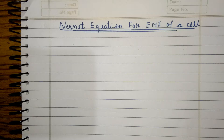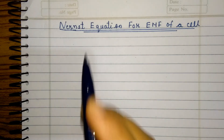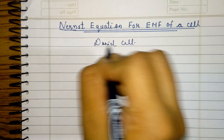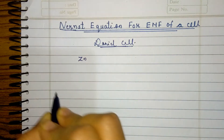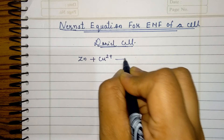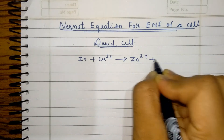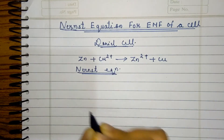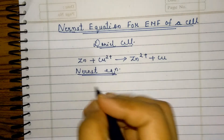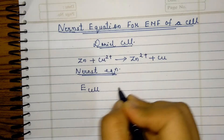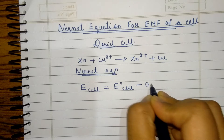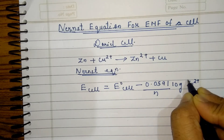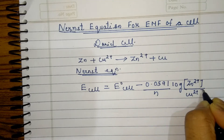Hello students. In this video we will be discussing problems related to the Nernst equation. Before that, let us consider the Nernst equation for EMF of a cell, taking the Daniel cell as the example. In the Daniel cell, the cell reaction is: zinc plus Cu²⁺ gives Zn²⁺ plus Cu. Applying the Nernst equation, the electrode potential is E⁰cell minus 0.0591/N log([Zn²⁺]/[Cu²⁺]).